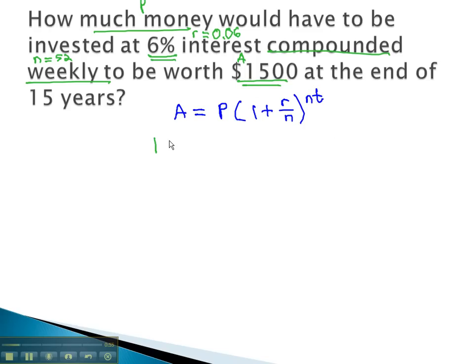Plugging this into our formula, we get 1500 for the A, equals some unknown principle, times 1 plus the rate as a decimal, 0.06, over the number of compounds, 52, to the nt, or 52 times the 15 years, which is our time.